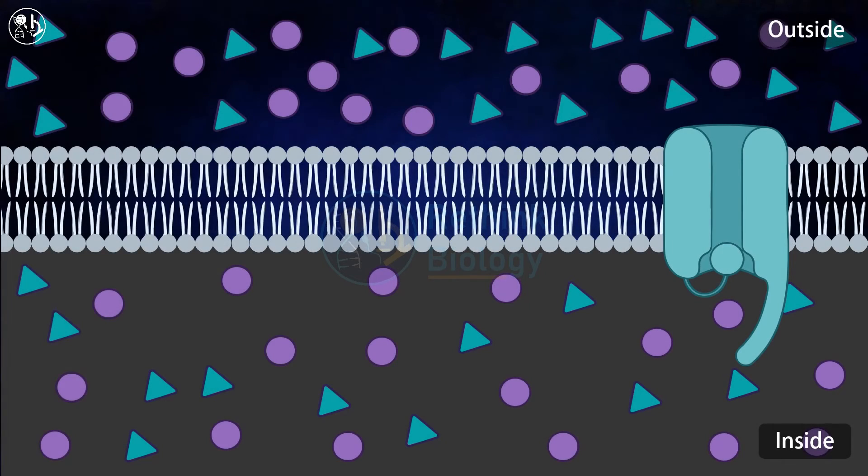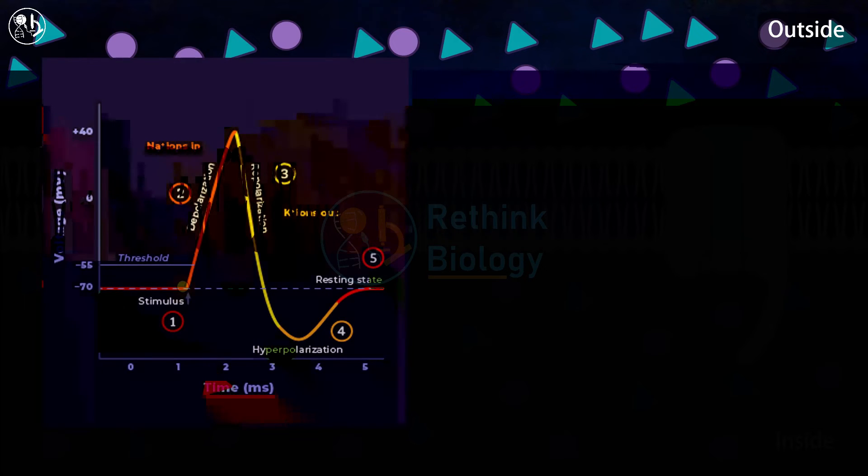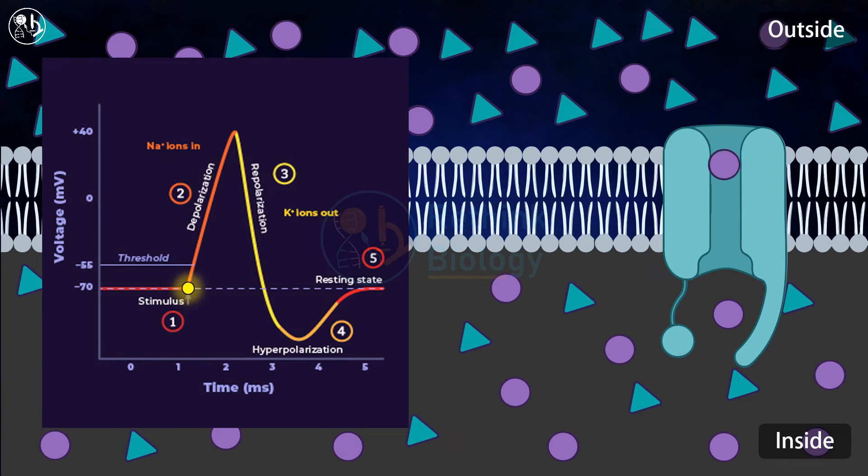The next stage is depolarization stage. At this time, a stimulus opens some sodium channels. The consequent influx of sodium ions through these channels depolarizes the membrane, with the potential rising from minus 70 millivolt to minus 40 millivolt, and this is called depolarization.